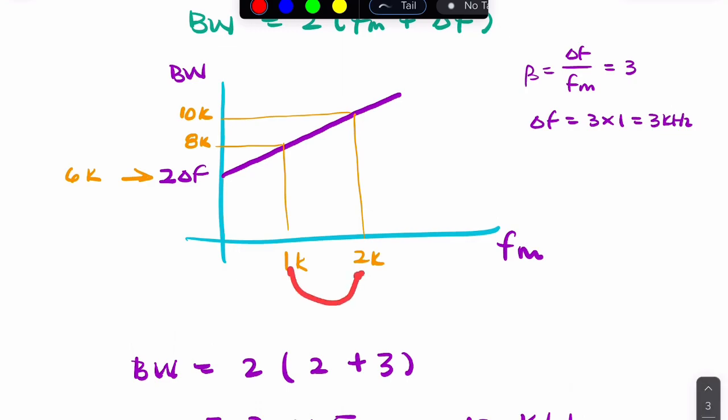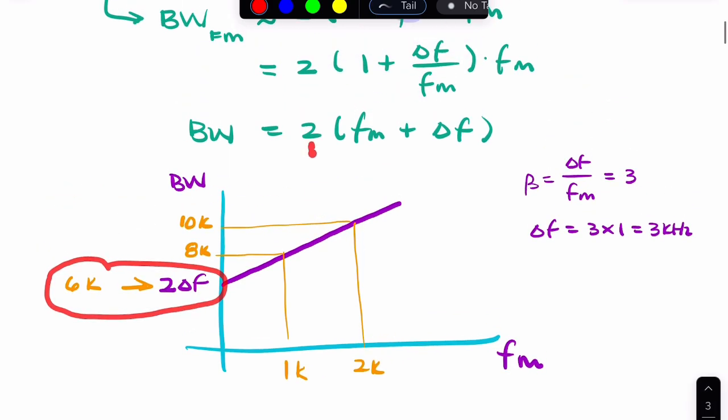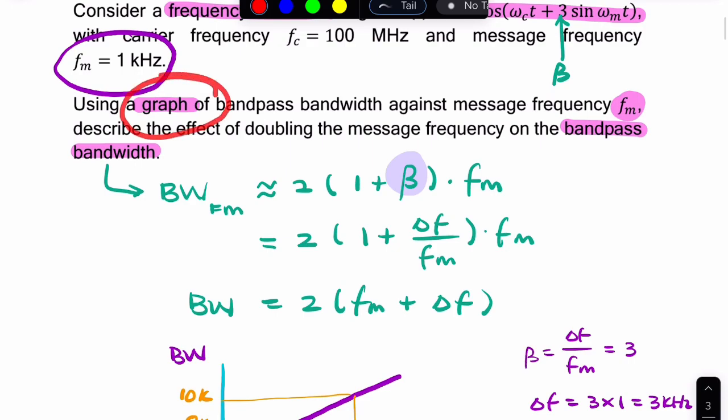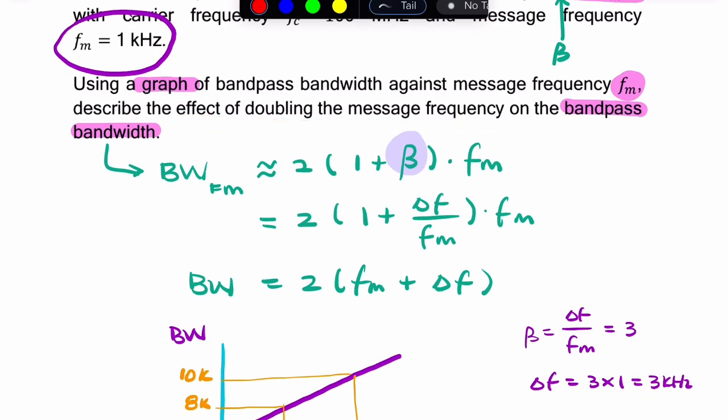Notice that doubling your message hasn't doubled your bandwidth. It's increased it from 8k to 10k, and that's as a result of this y-intercept of 2 delta F. So that graph has helped us to find the effect of doubling the message frequency on the bandpass bandwidth.